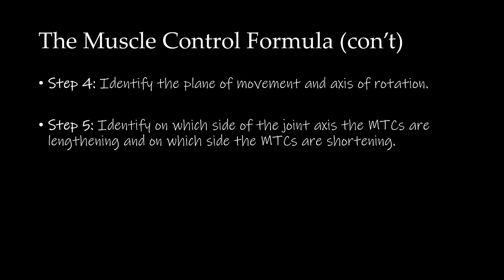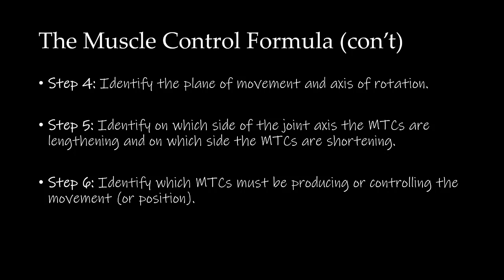Step 5 was to identify on which side of the joint axis the MTCs were lengthening, and on which side the MTCs were shortening. We determined that the MTCs anterior to the axis of rotation were shortening, and the MTCs on the posterior side were lengthening. Step 6 was to identify which MTCs must be producing or controlling the movement or position. Since we had a concentric MTC action, the MTCs that are shortening will be controlling the movement. Since the horizontal adductors were shortening, we conclude that the horizontal adductors were controlling horizontal adduction concentrically.